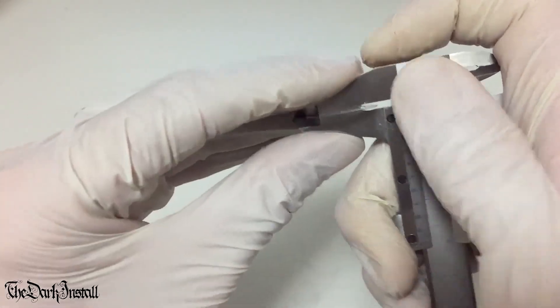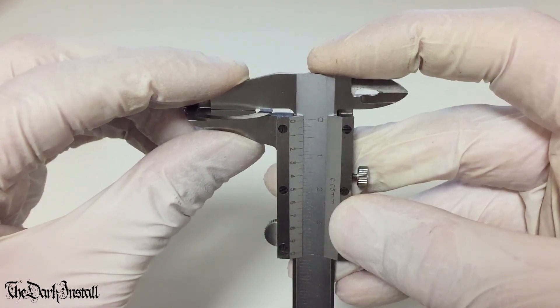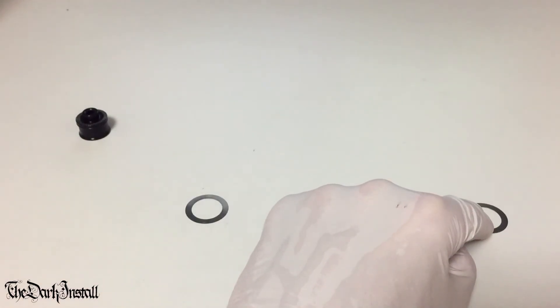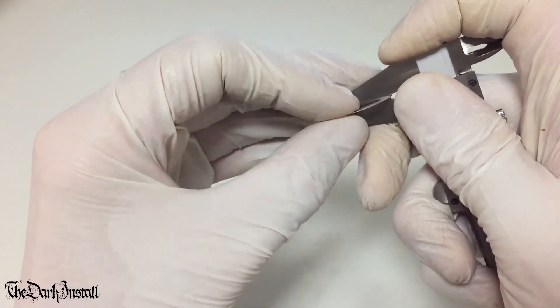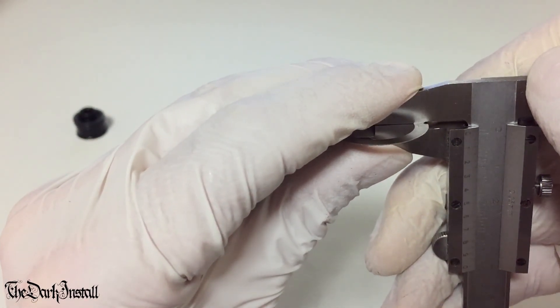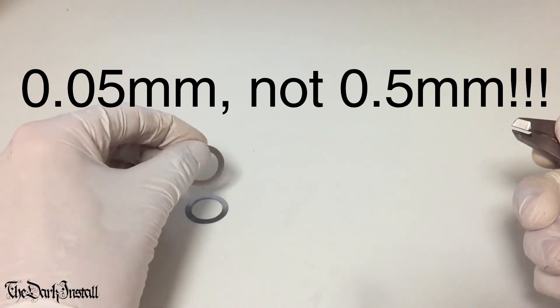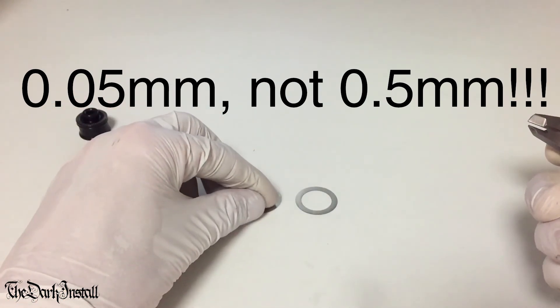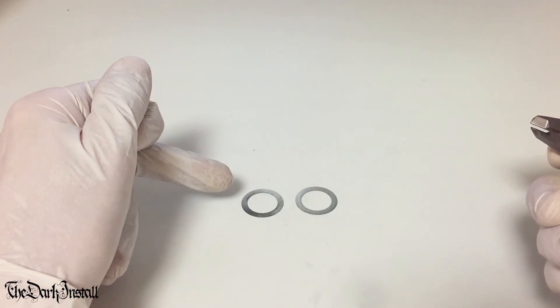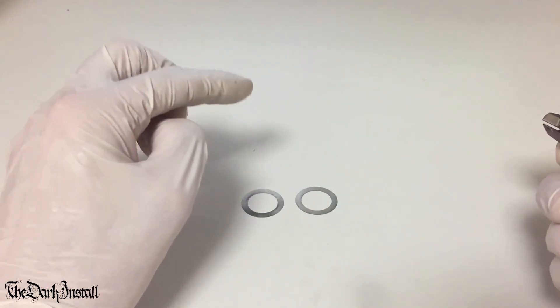You're probably quicker than me at this. That should be 0.25. That one's 0.2. Okay so we're 0.05 out. So Tune haven't given us the right amount of washers. So to fix this issue we need to add a 0.05 washer. So there you go, they don't always do it right.